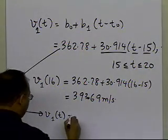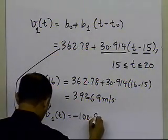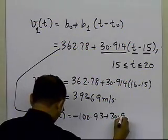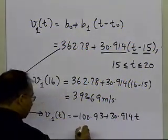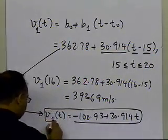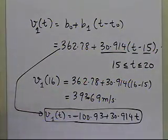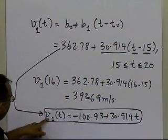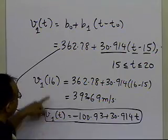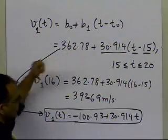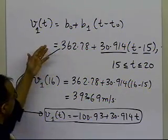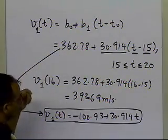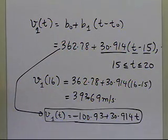If we expand this polynomial, we get V₁(t) = -100.93 + 30.914t, the same interpolant from the direct method. The polynomial is unique—there's no difference between the two methods, just the form. We use this form because calculating b₀ and b₁ doesn't require solving simultaneous linear equations.